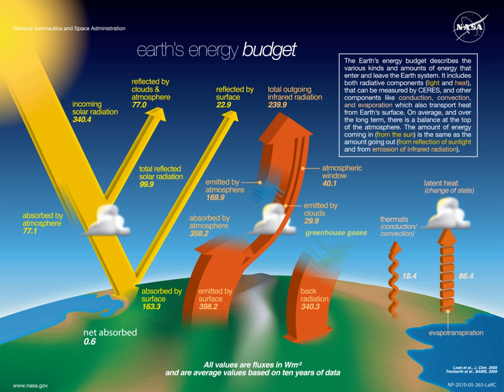Climate forcings are changes that cause temperatures to rise or fall, disrupting the energy balance. Natural climate forcings include changes in the Sun's brightness, Milankovitch cycles—small variations in the shape of Earth's orbit and its axis of rotation that occur over thousands of years—and volcanic eruptions that inject light-reflecting particles as high as the stratosphere. Man-made forcings include particle pollution that absorbs and reflects incoming sunlight, deforestation which changes how the surface reflects and absorbs sunlight, and the rising concentration of atmospheric carbon dioxide and other greenhouse gases, which decreases the rate at which heat is radiated to space.